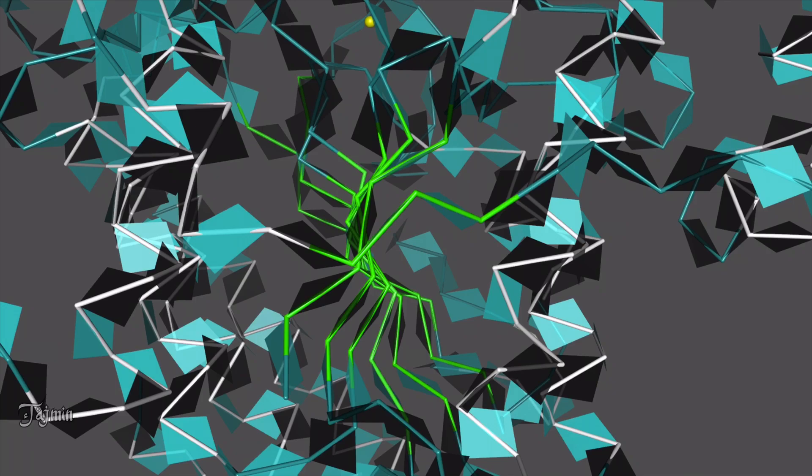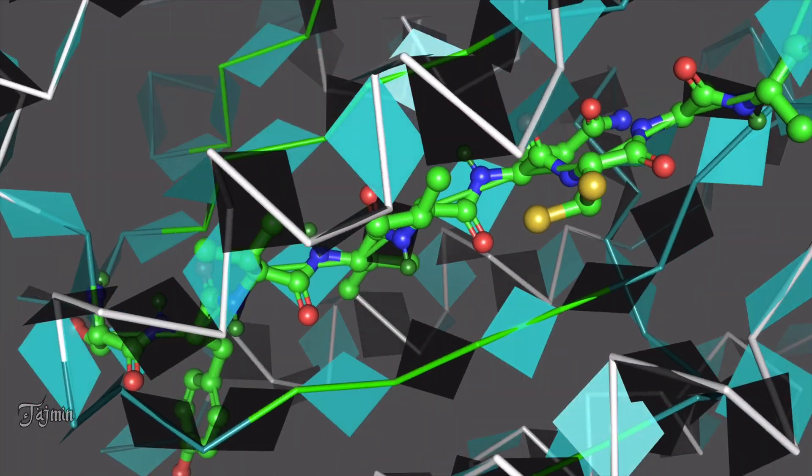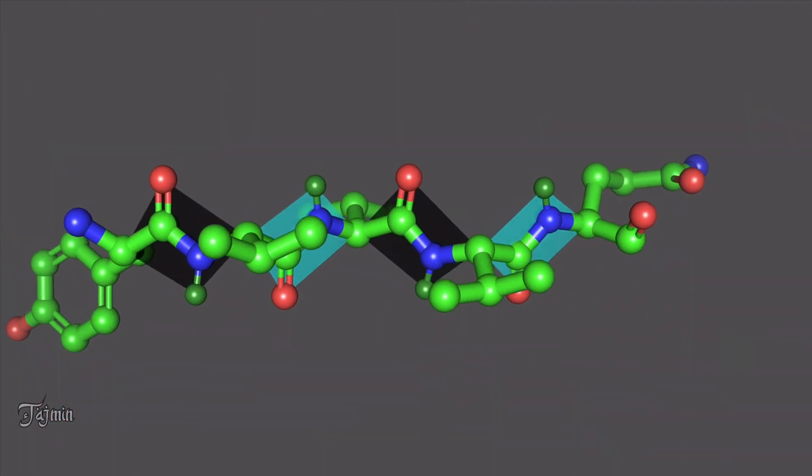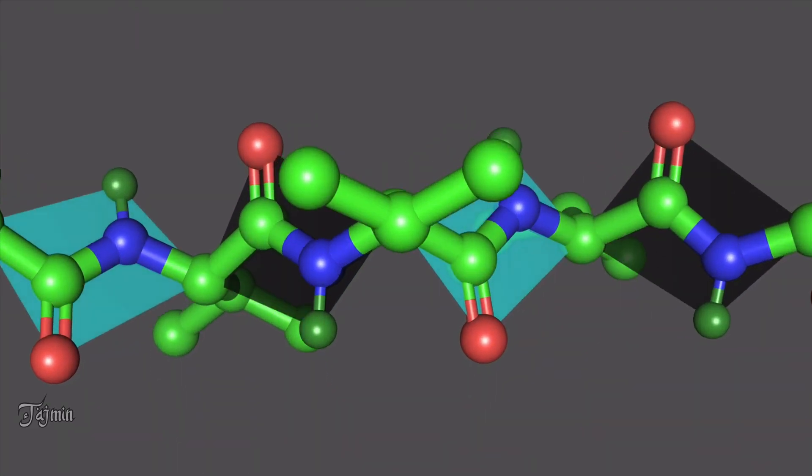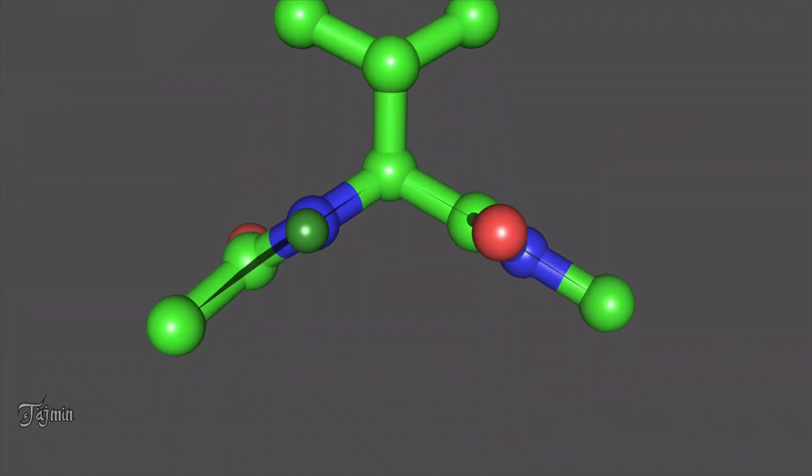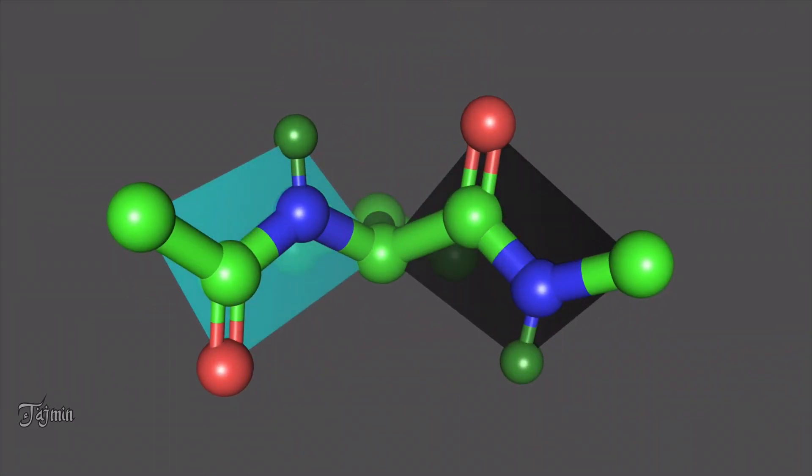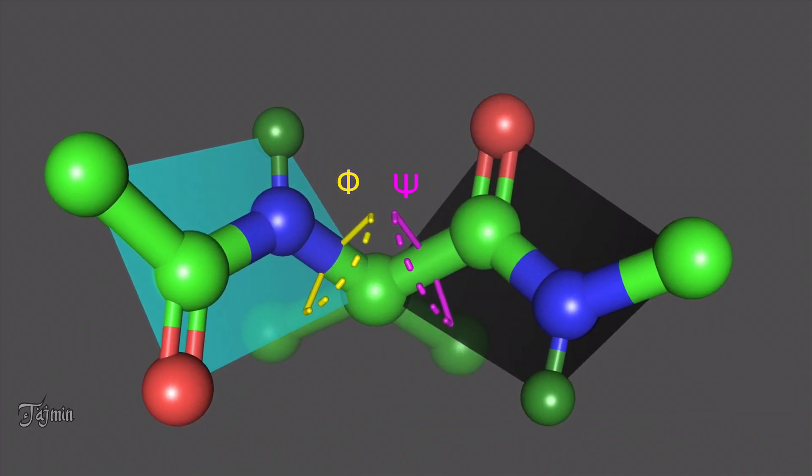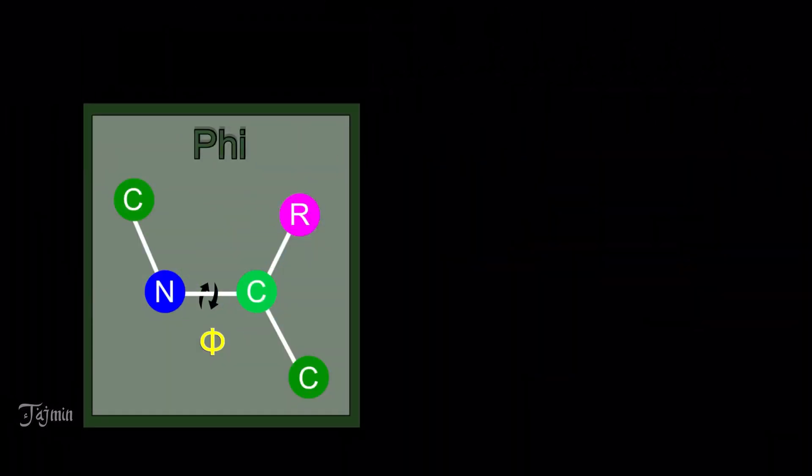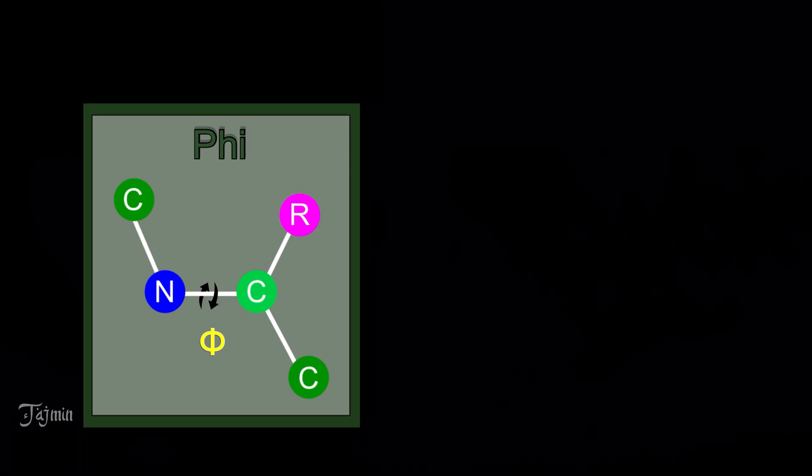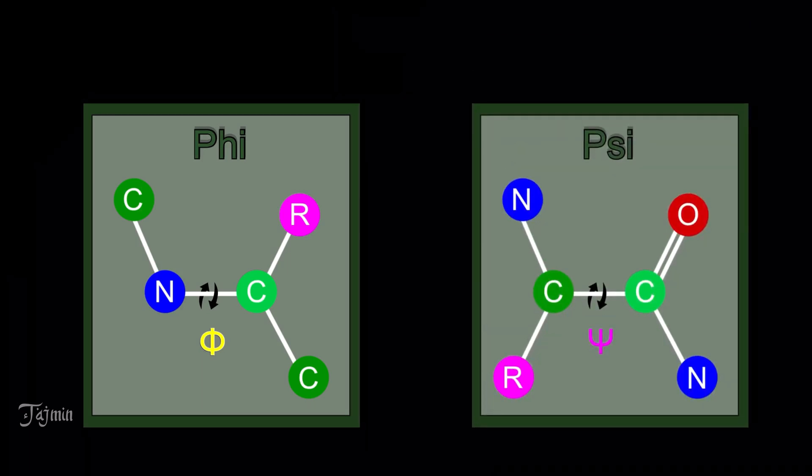The architecture of a protein depends upon the orientation of the peptide planes with one another. The angles which determine the orientation of these peptide planes are called as dihedral angles. The torsion angle around the bond N to C alpha is called as phi. And the torsion angle around the bond C to C alpha is called as psi.